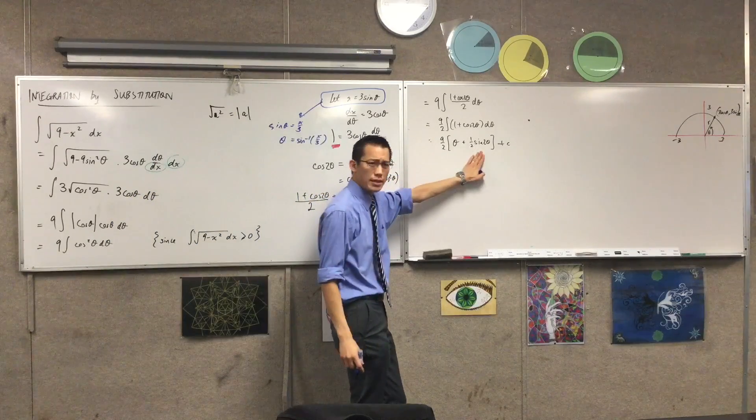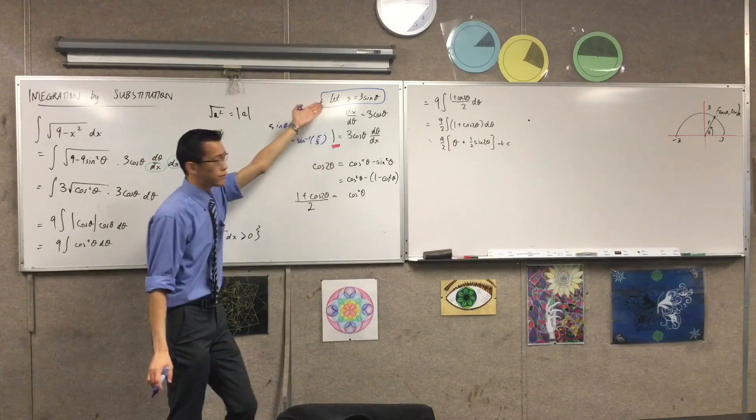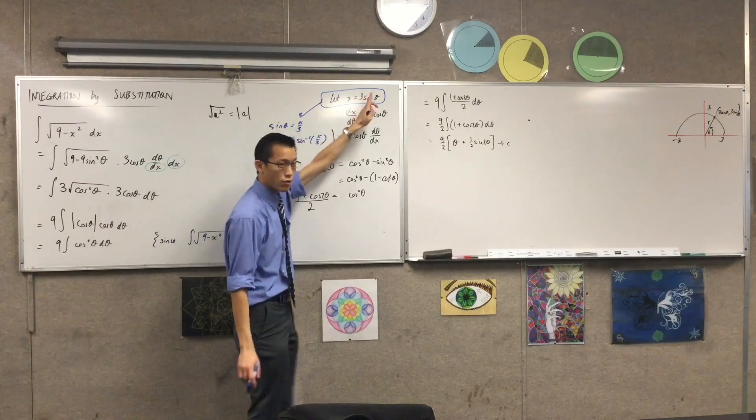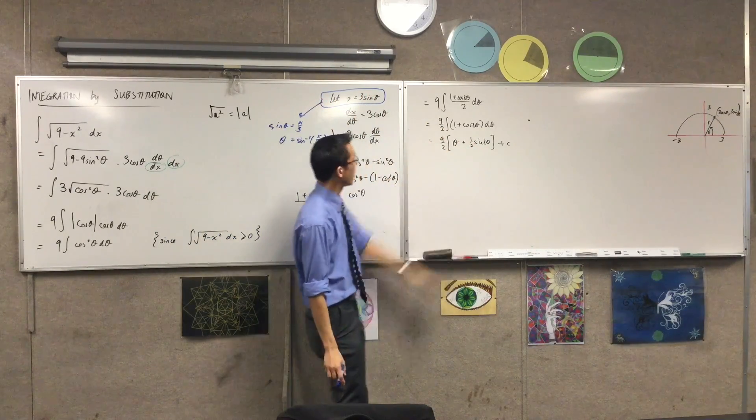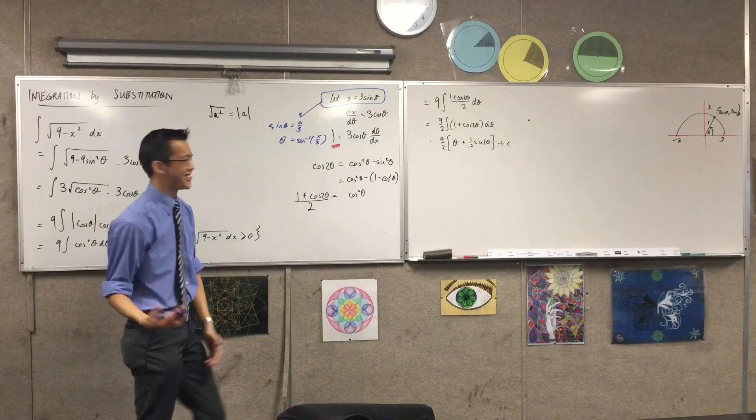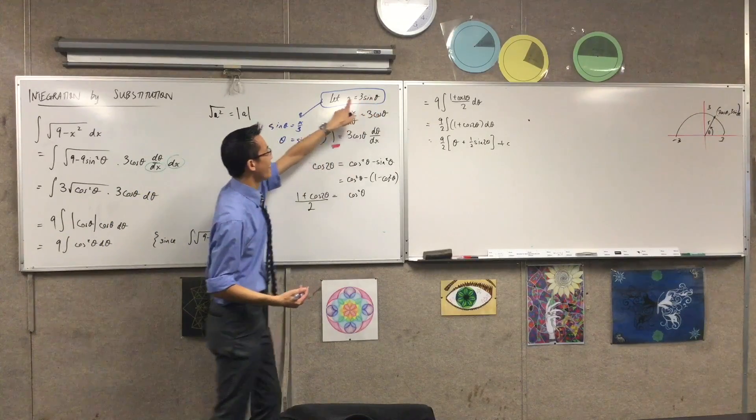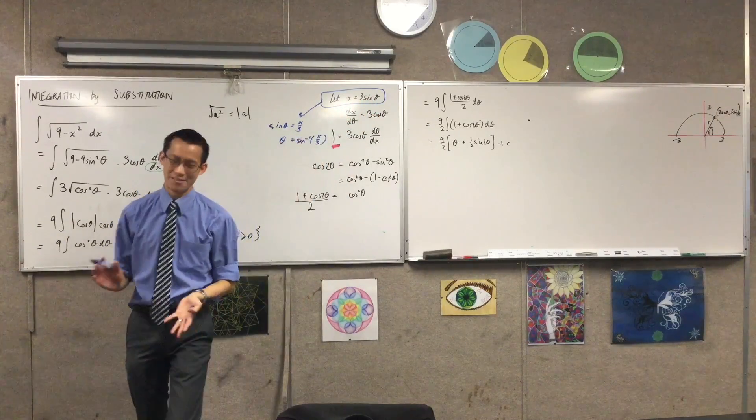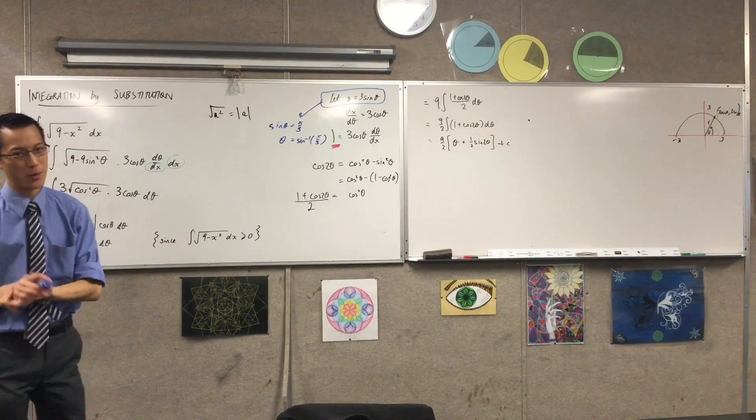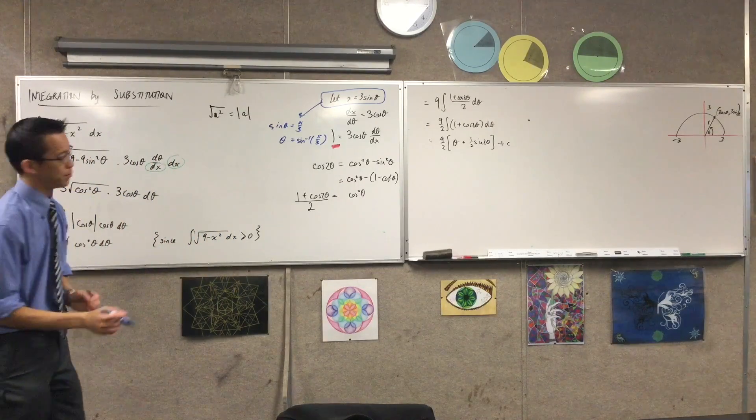But how do I deal with this? This is a bit icky. My original function is in terms of a single theta, not in terms of two theta. And we know it's not just as simple as, oh, I'm going to put two there. We know from all our work with trig, that double angle formulas, compound angle formulas, not that simple.